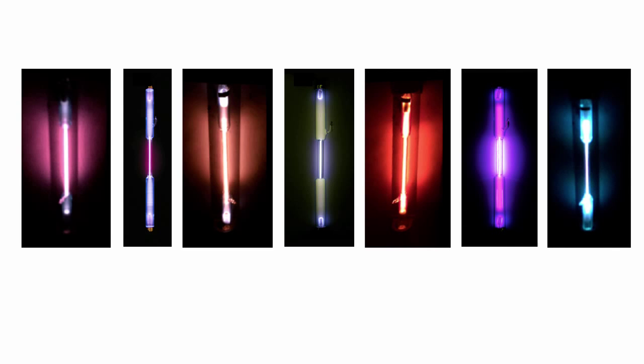These are some gases in discharge tubes, and the same basic idea applies. Each gas has a different color that it appears, and a different spectrum. From left to right: hydrogen, deuterium is D2, which is an isotope of hydrogen, helium, oxygen, neon, nitrogen, and mercury. These are gases that produce discrete spectra when they're energized in a discharge tube.